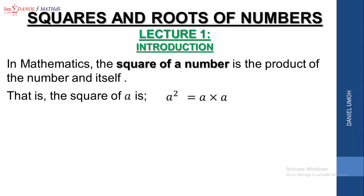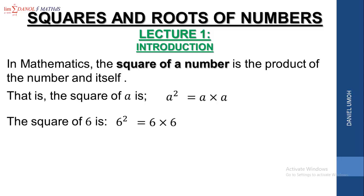For instance, the square of Philip means Philip times Philip. The square of Daniel means Daniel times Daniel. So the square of a, which is a², equals a times a. Now let's look at the square of 6. The square of 6 is 6², which equals 6 times 6, and that gives us 36.